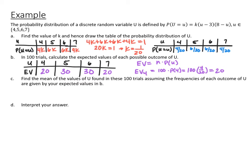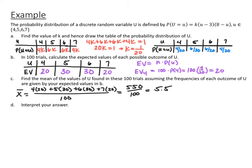For part C, we find the mean value of U in these 100 trials, assuming the frequency of each outcome equals the expected value. Treating 4, 5, 6, 7 as data and 20, 30, 30, 20 as frequencies, the mean is (4×20 + 5×30 + 6×30 + 7×20) / 100 = 5.5.